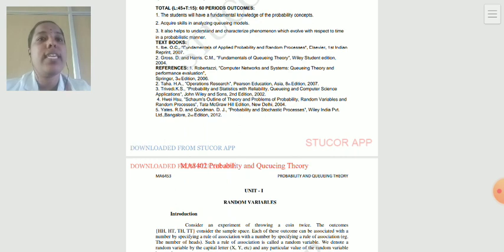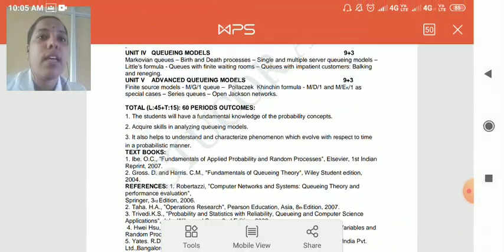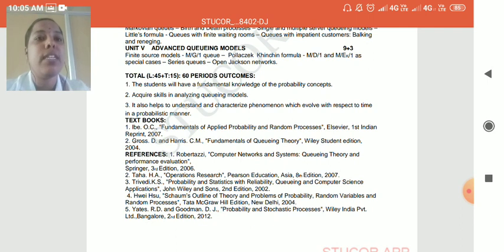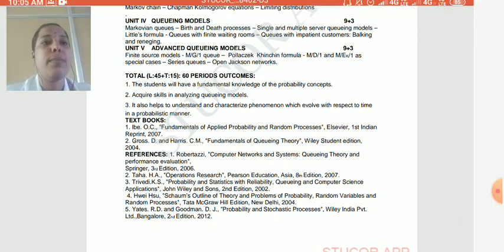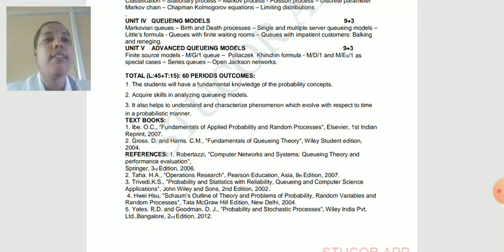So, textbook, we are going to follow. Oliver C. Ibe, Fundamentals of Applied Probability and Random Process. Elsevier, First Indian Reprint, 2007.